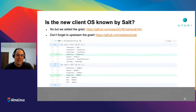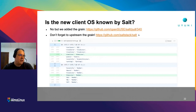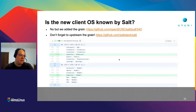If the new client OS is not known by Salt — which was the case with AlmaLinux — you need to add a grain. Adding a grain is rather easy. You go to Salt upstream and also to the OpenSUSE package, which is usually faster than Salt accepting your grain. You just need to set a code name string and that's it. Then you say AlmaLinux is of the Red Hat family, so Salt knows what package manager to use, how to resolve conflicts, and so on.